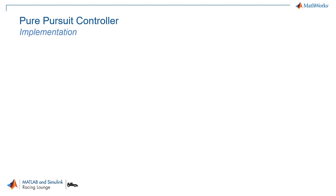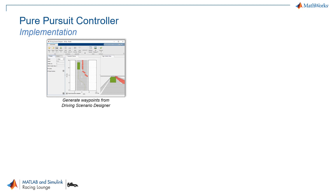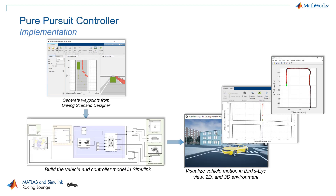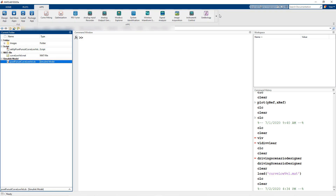Here are the steps involved in implementing the Pure Pursuit controller using Simulink. As a first step, we generate the waypoints or reference points, then we build the model in Simulink, and finally we visualize the vehicle motion in various environments such as 2D, 3D, and Bird's Eye Scope. Now let's switch to MATLAB and check out these steps in detail.